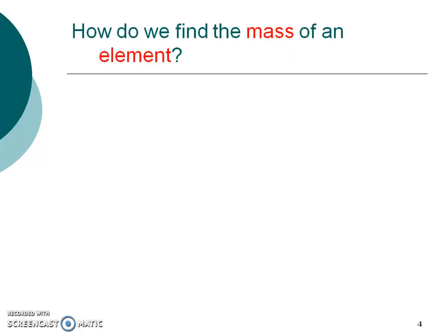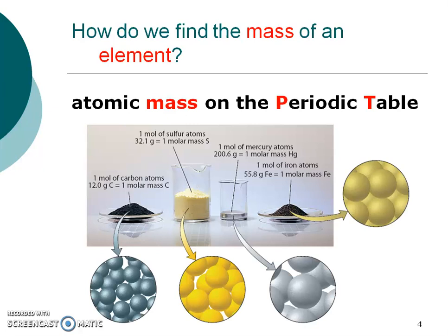So how would we find the mass of an element? We're probably going to use the periodic table. If we look at that periodic table, the mass of an element really represents how many grams we would have to mass out in order to get one mole of that substance. For instance, if you look at carbon on your periodic table, 12 grams would equal one mole of those carbon atoms. For sulfur, you would need 32.1 grams of sulfur to have one mole of those sulfur atoms.